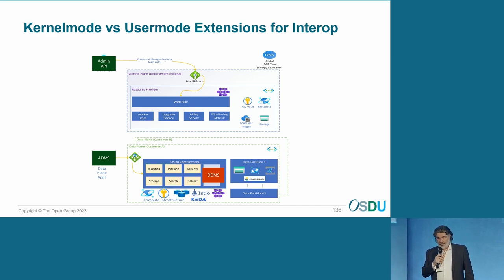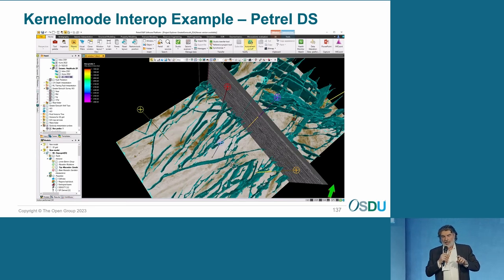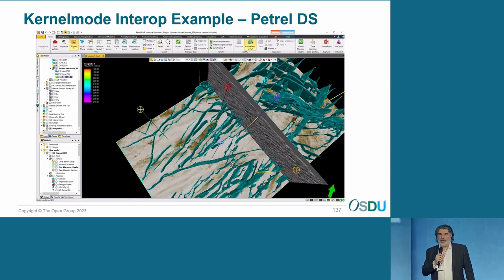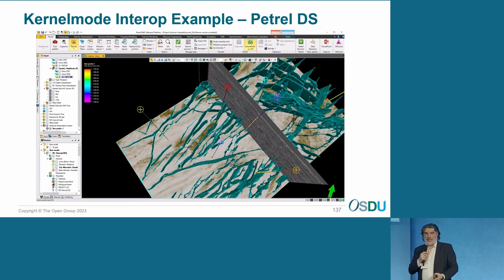Let me show an example: seismic DDMS. There was a good video in the previous session showing seismic data streaming into Petrel directly from OSDU — that's a good example of a kernel-mode, or OSDU-integrated, DDMS extension. It uses seismic DDMS as the backend and has to be part of OSDU itself because running it outside might not perform adequately. Reservoir DMS is another example. These OSDU-integrated extensions need to be developed over time for reasons of performance or certain required functions and features.